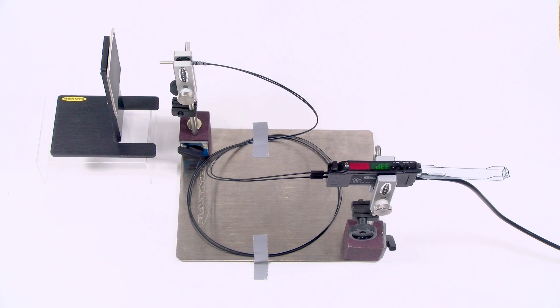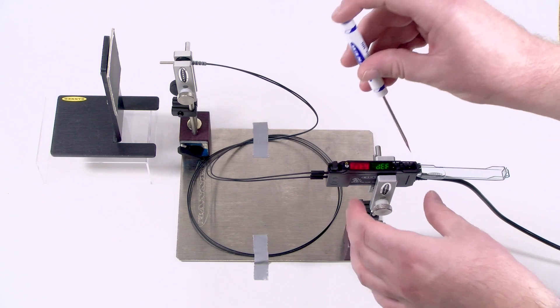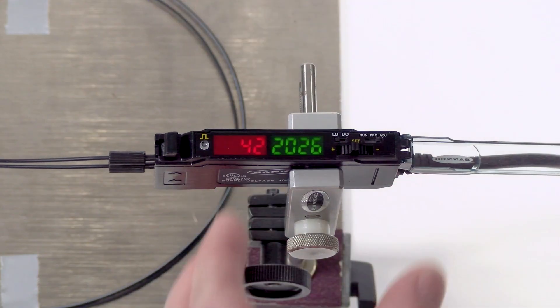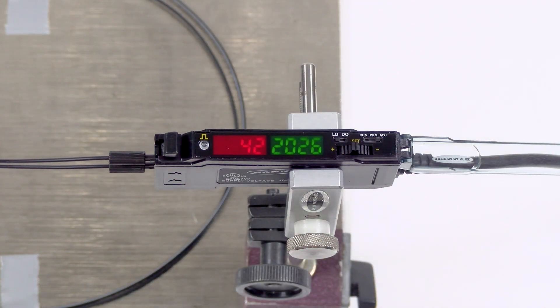The default teach mode after resetting the amplifier is two-point teach. To teach the amplifier, move the mode switch to ADJ to access the adjust mode.